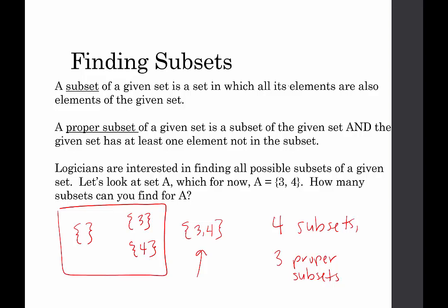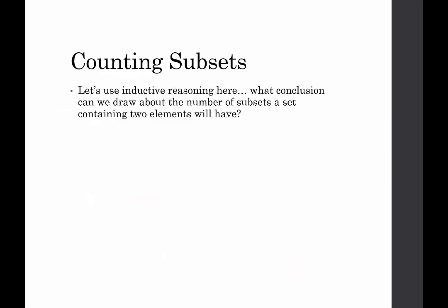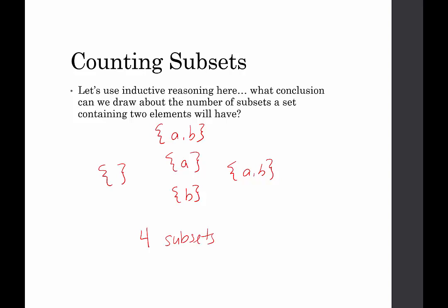We're going to apply this and make a generalization using inductive reasoning to draw a conclusion about how many subsets a set will have which contains two elements. If we have two elements, which we could call A and B, or 3 and 4, or 1 and 2, we're always going to have the empty set, a set containing the first element, a set containing the second element, and a set containing both elements. So any set containing two elements will always have four subsets.